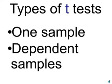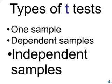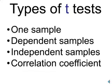There are four types of t-tests. The one-sample t-test is used in a sample versus norms design. The dependent samples t-test is used in a repeated measures design. The independent samples t-test is used in a separate groups design. There is also a t-test that looks for the significance of a correlation coefficient.